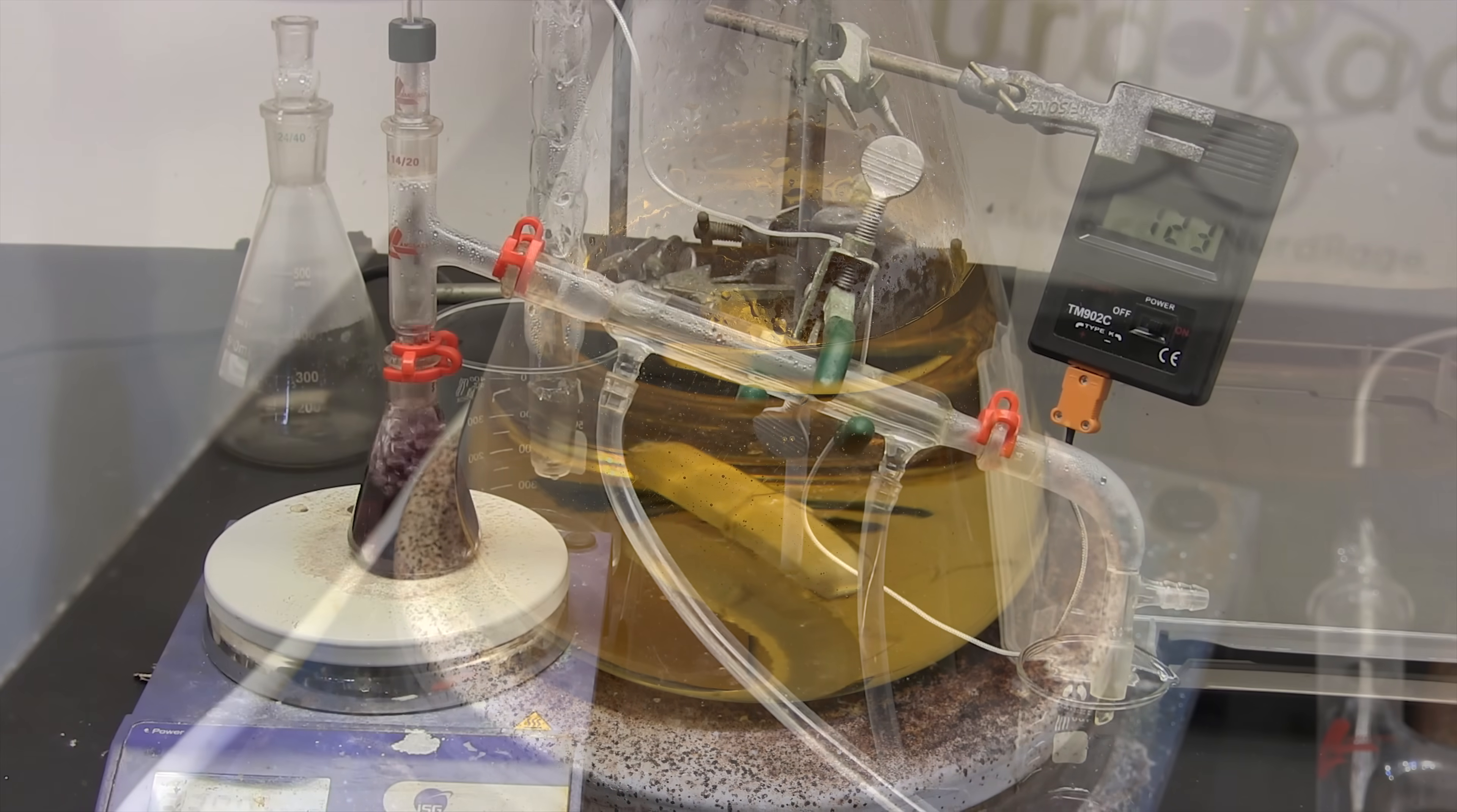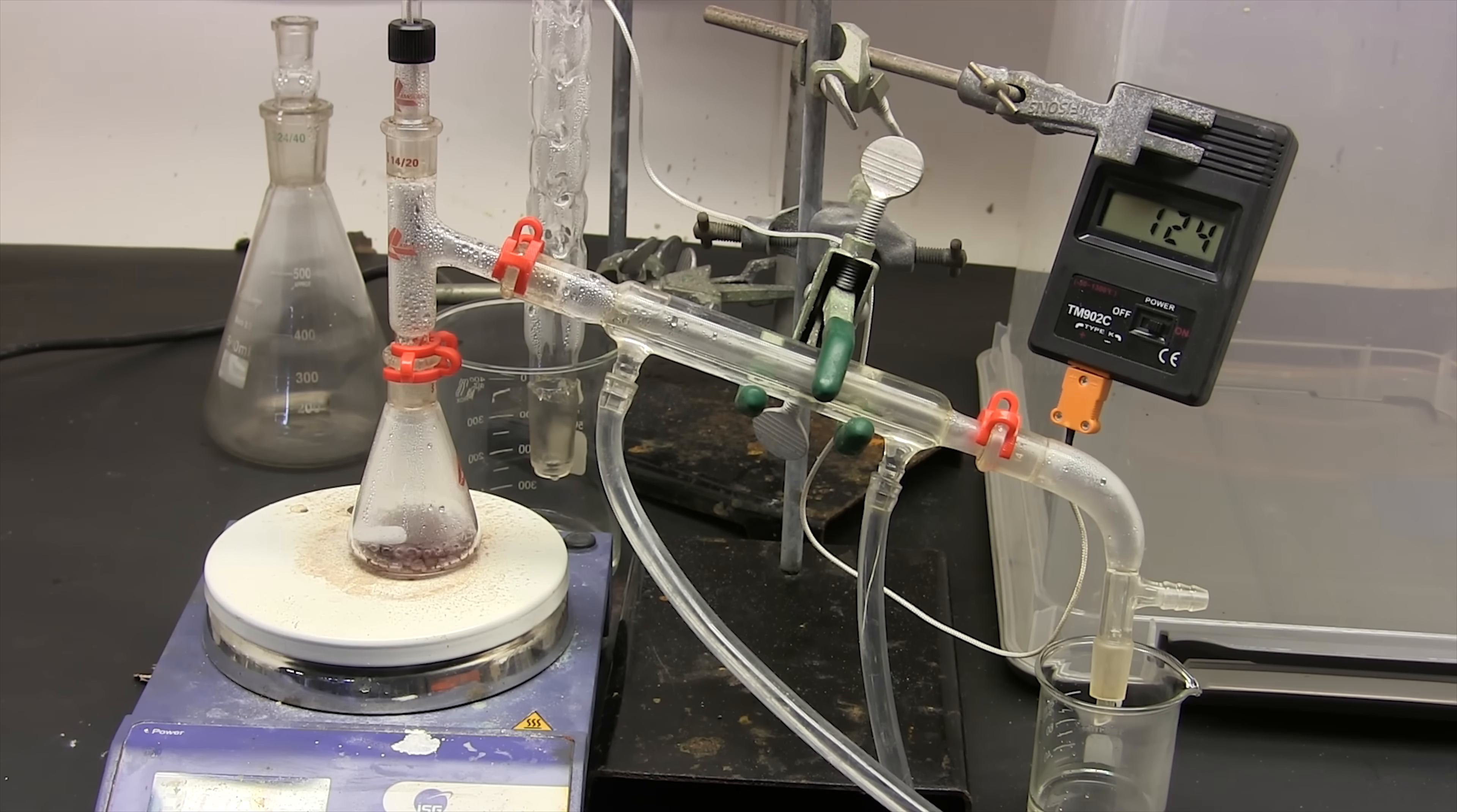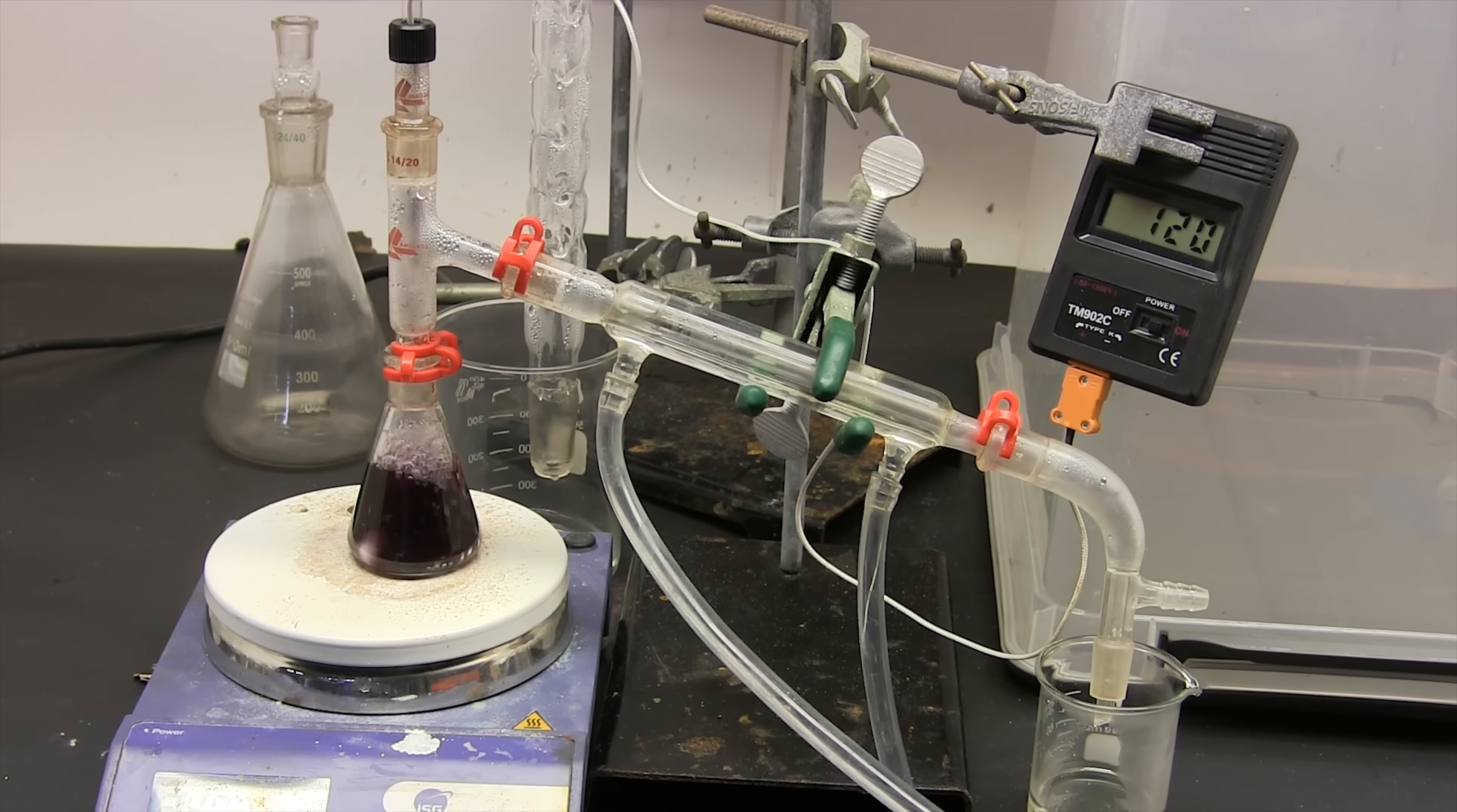When I previously made hydrobromic acid in an earlier video I tried to use copper metal to react it away. And it worked to some extent but it wasn't completely effective. I still had a bit of yellow color.